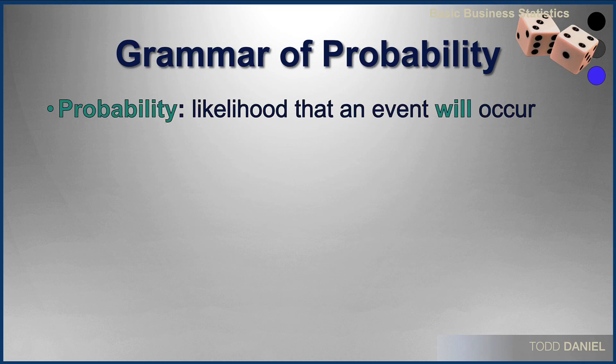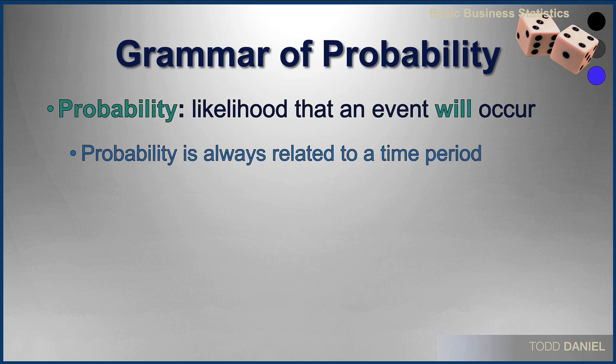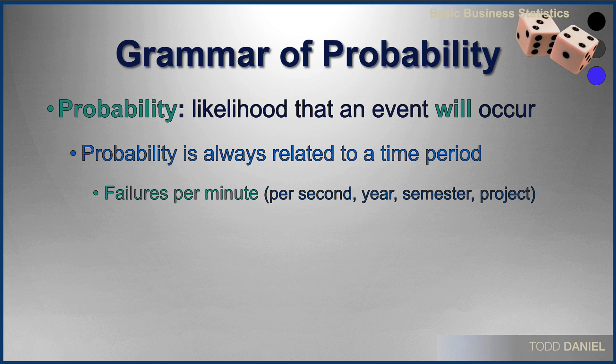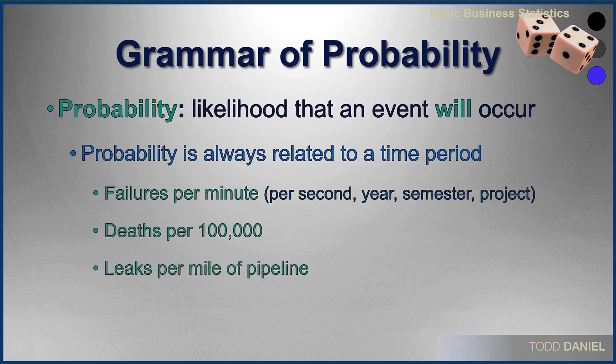Probability is the likelihood that an event will occur. Probability is almost always related to some time period or some other form of context — like failures per minute, which could also be failures per second, per year, per semester, or per project. Deaths per 100,000, or leaks per one mile of pipeline.